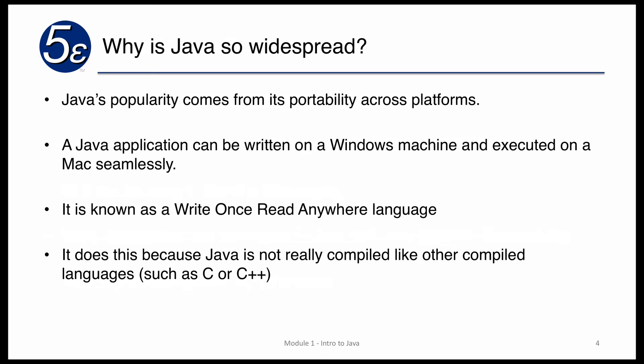So why is Java so widespread? It comes from its portability across platforms. An application written on Windows can be executed on a Mac seamlessly, and this holds true for any number of devices. You can even take a Java application and execute it on a cable box or a set-top box, within some degree of give and take, because there is a Java virtual machine. Theoretically it would work. This is known as write-once-read-anywhere — you can write it on one platform and execute it anywhere you'd like.